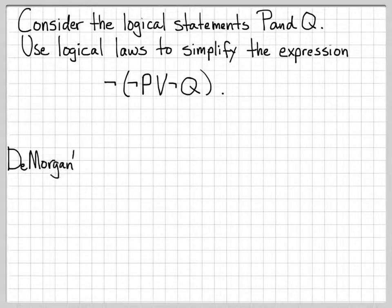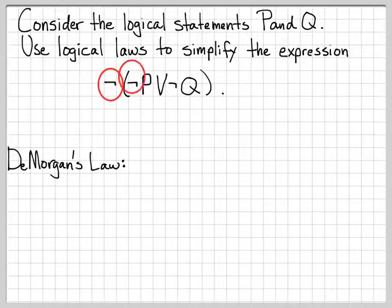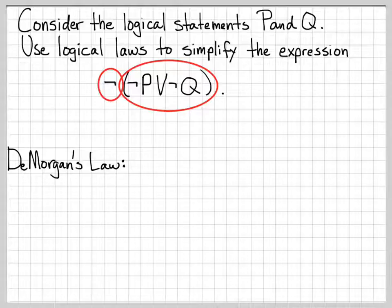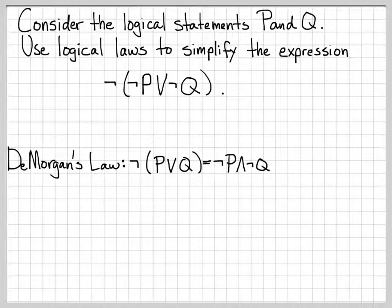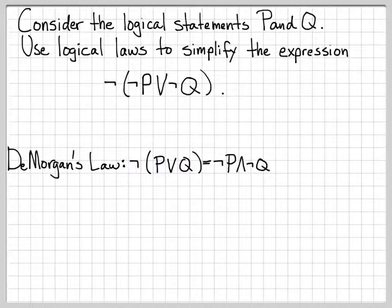One of the first things that comes to mind is applying DeMorgan's Law. Anytime you have a not symbol and then a quantity, distributing the not across that quantity can sometimes simplify things. DeMorgan's Law says that the not of the quantity P or Q is equal to not P and not Q. This law lets us distribute the not across each element inside the parentheses, and when we have an or symbol, we flip it to an and symbol.